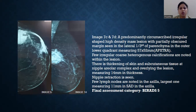Few irregular-shaped, coarse, heterogeneous calcifications were noted. Thickening of skin and subcutaneous tissue at the nipple-areolar complex and nipple retraction were seen. Few axillary lymph nodes were noted. This was assigned BI-RADS 5.